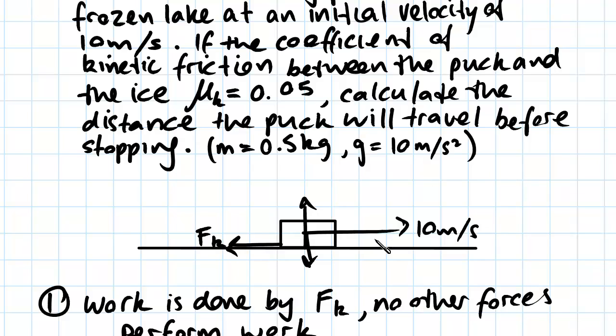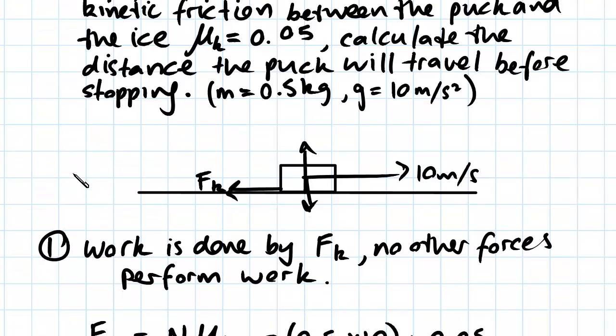So basically, work is done only by the force of kinetic friction. This is because the other two forces, the gravity force and the normal force, both act perpendicular to the movement and don't actually affect the work done because there isn't a distance.